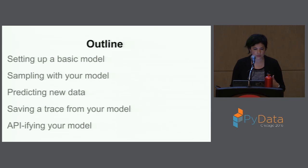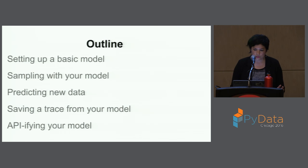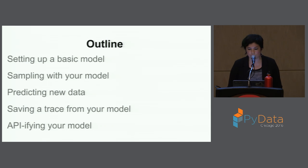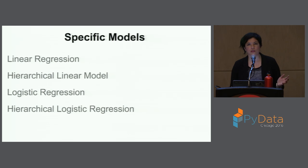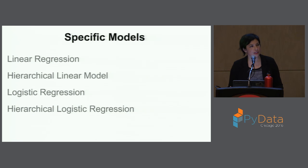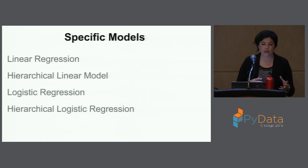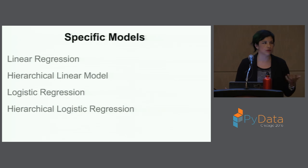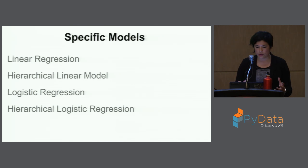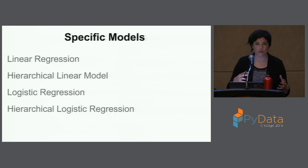Here's what I'm planning to cover: setting up a basic model in PyMC3, sampling from your model, predicting new data if you have a test set, and saving a trace so you can use it later — specifically if you need to make an API call to your model and predict one data point. The specific models I'll go over are linear regression, hierarchical linear regression, logistic regression, and hierarchical logistic regression. You probably wouldn't use PyMC3 for just basic linear regression — you'd use scikit-learn — but this is mostly to show you the PyMC3 syntax and allow you to build up more complicated models.